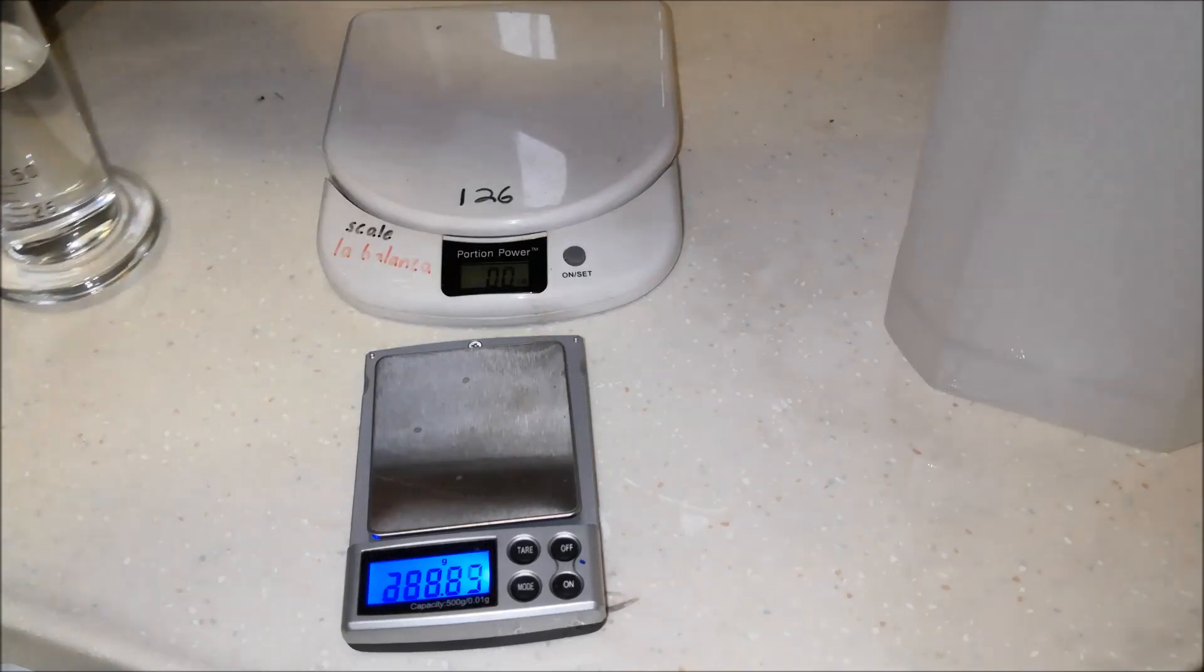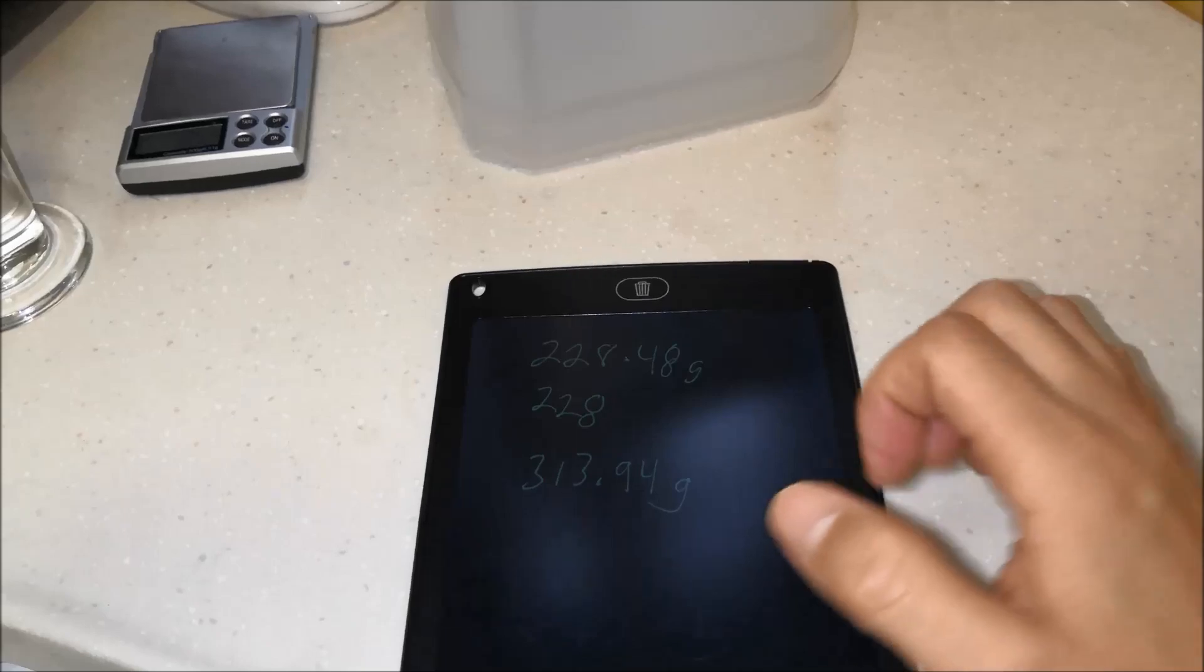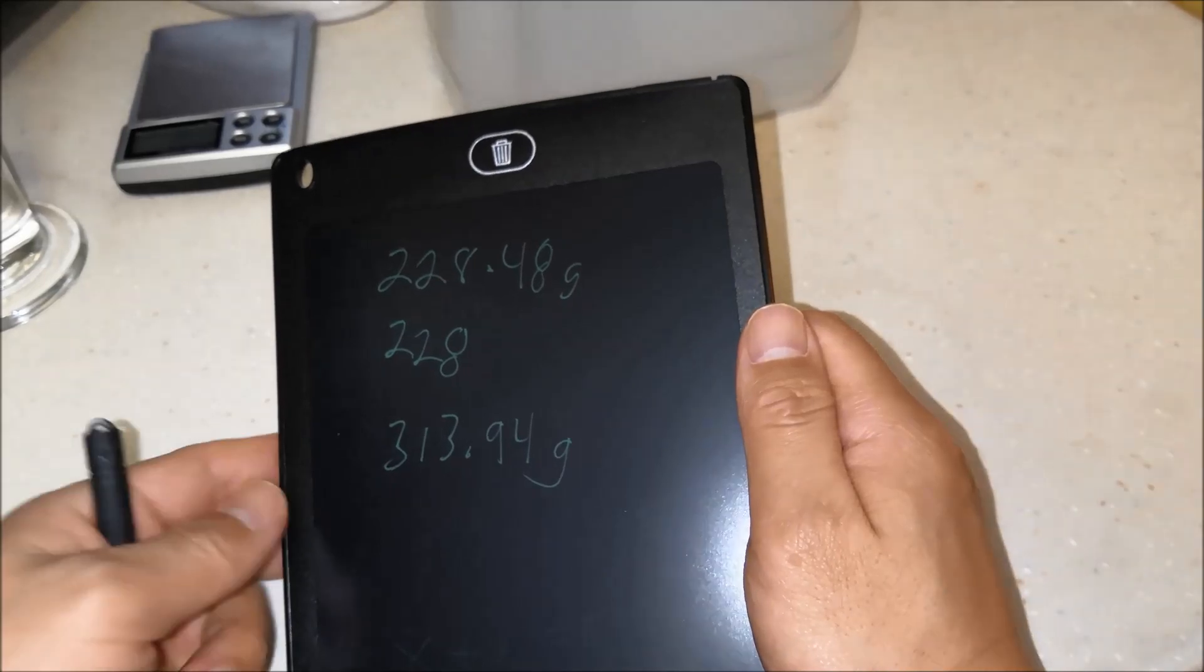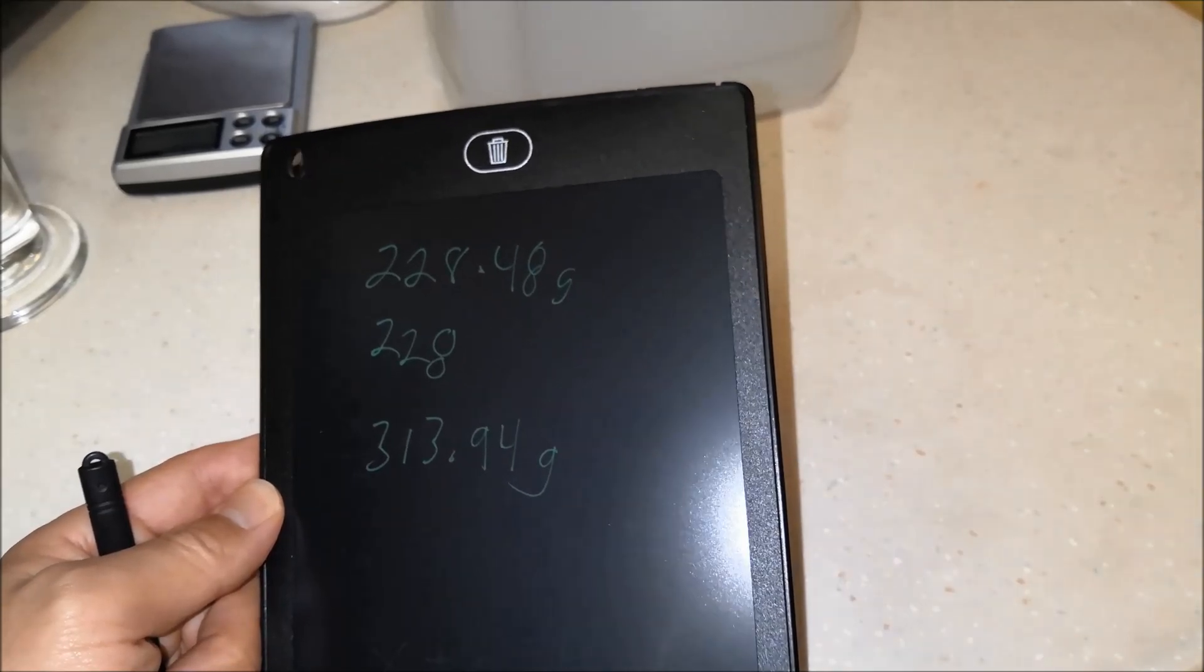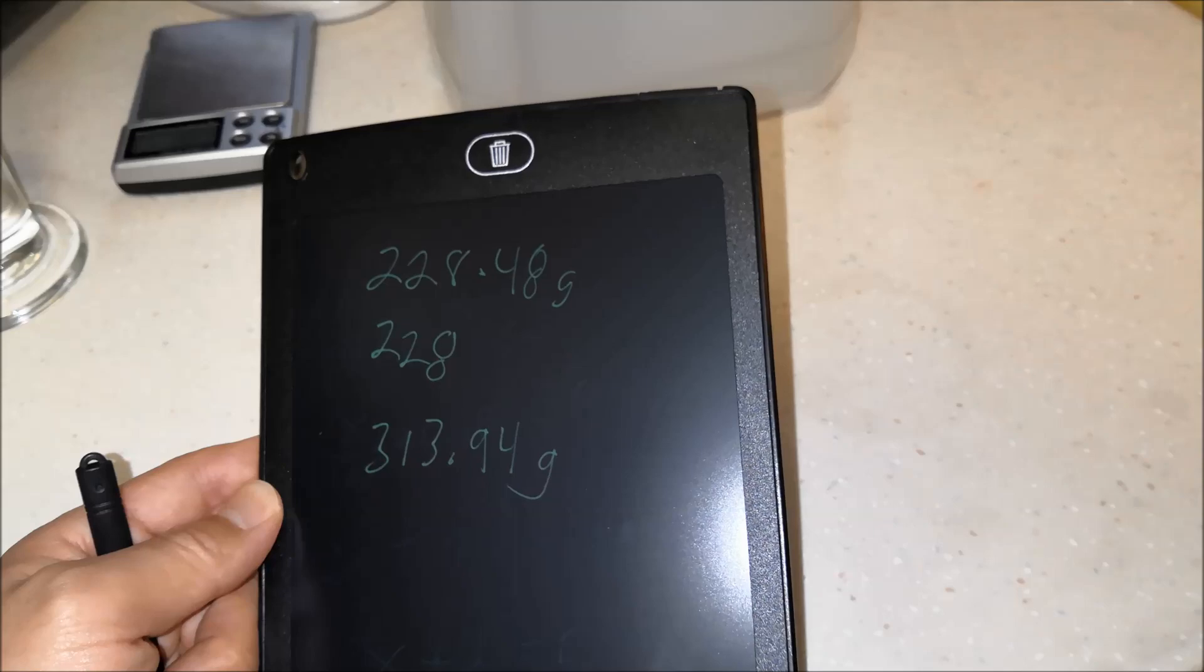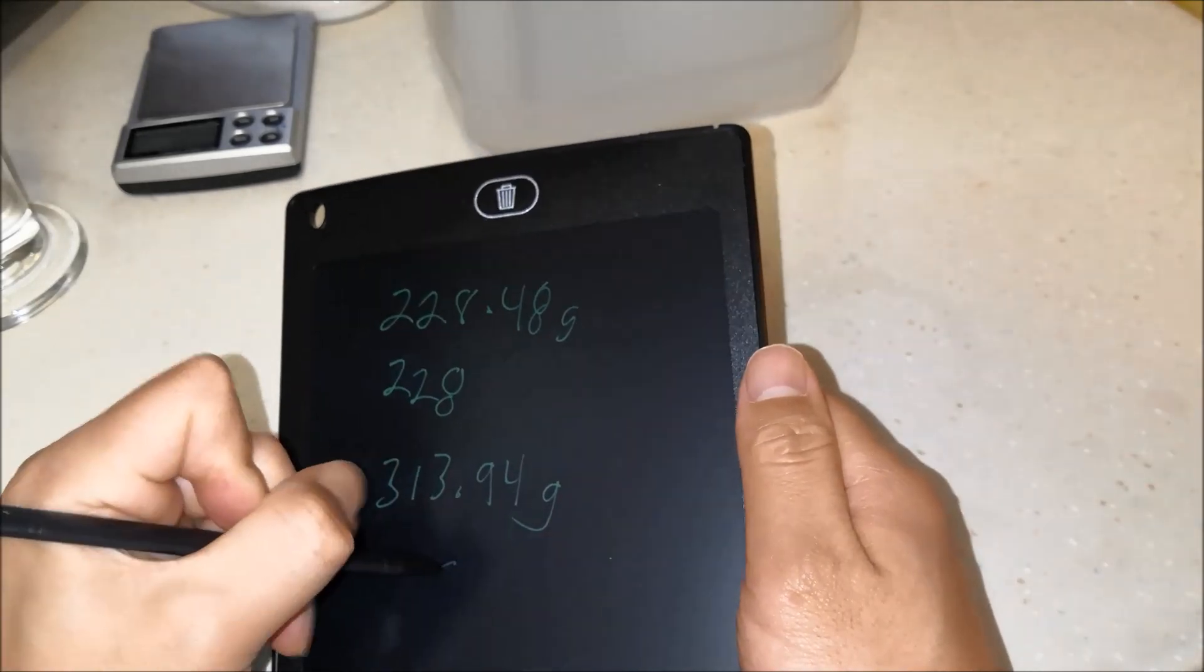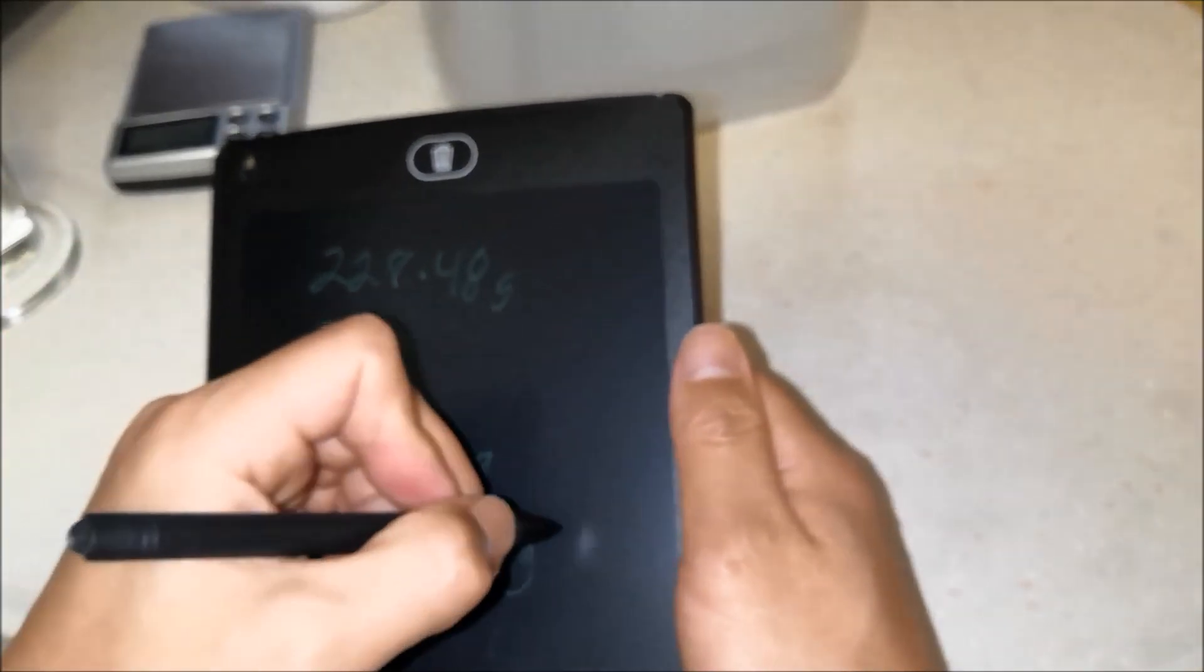So let's set this aside here. And we've got some alcohol on the table. Let's wipe that off. Okay. So this means we've got to do 313.94 and take off the weight of the cylinder. Let's see. What's 313.94 minus 228.48? The answer is 85.46. Okay. 85.46 grams is the mass of 100 milliliters of this isopropyl alcohol.